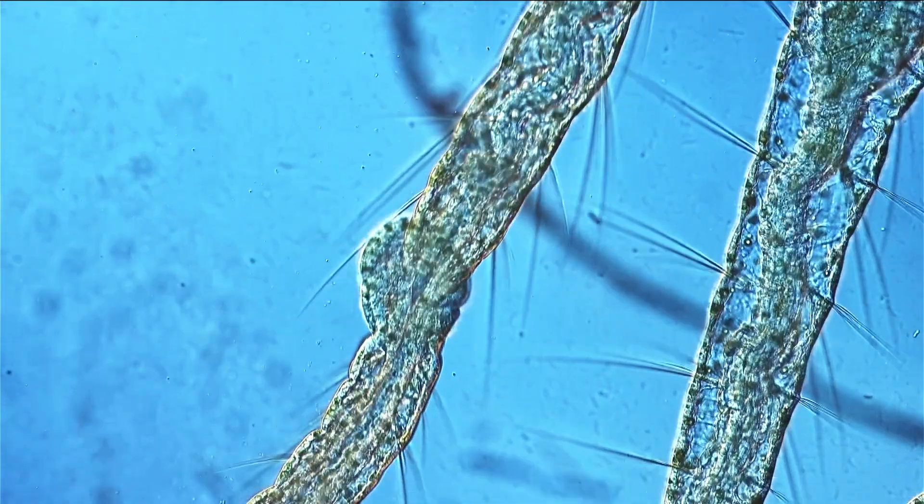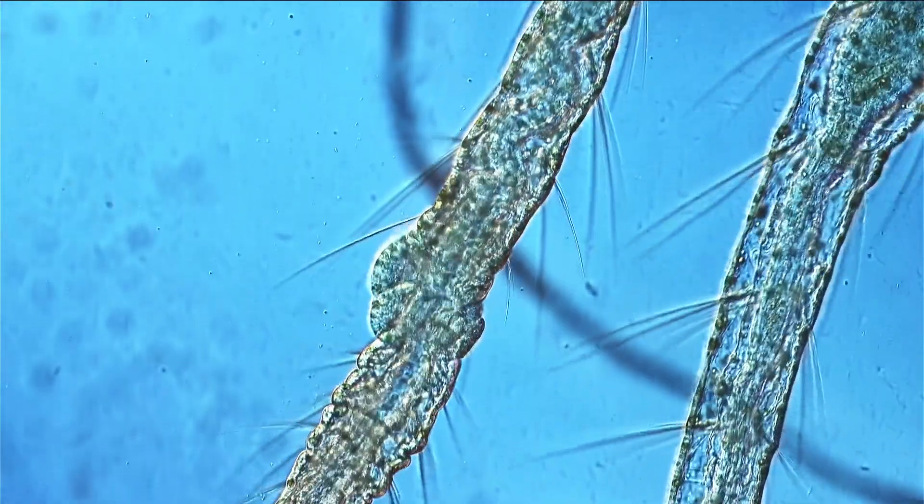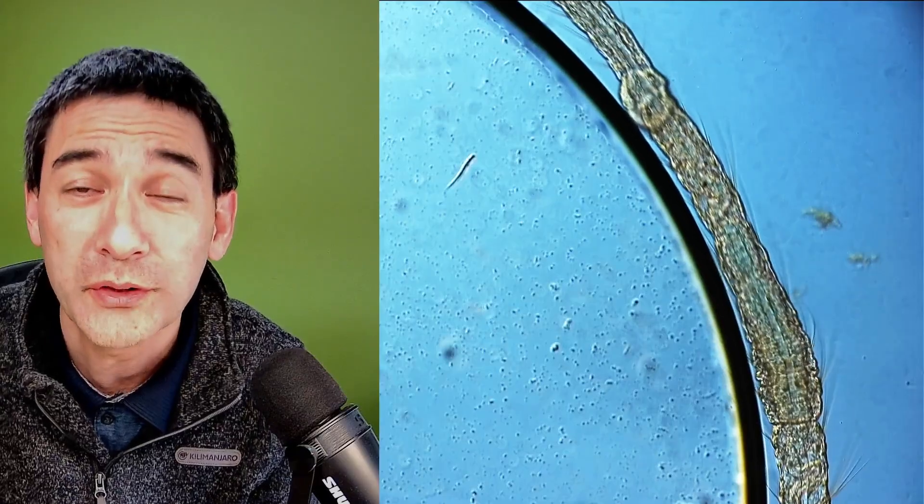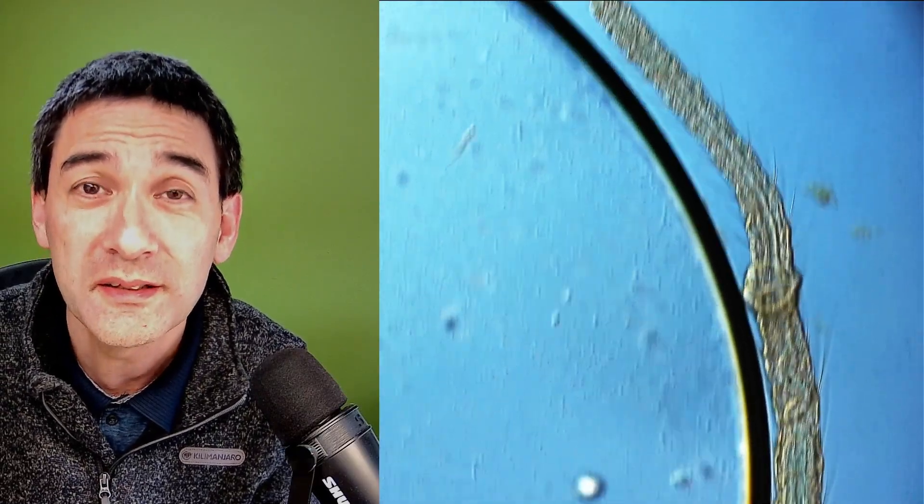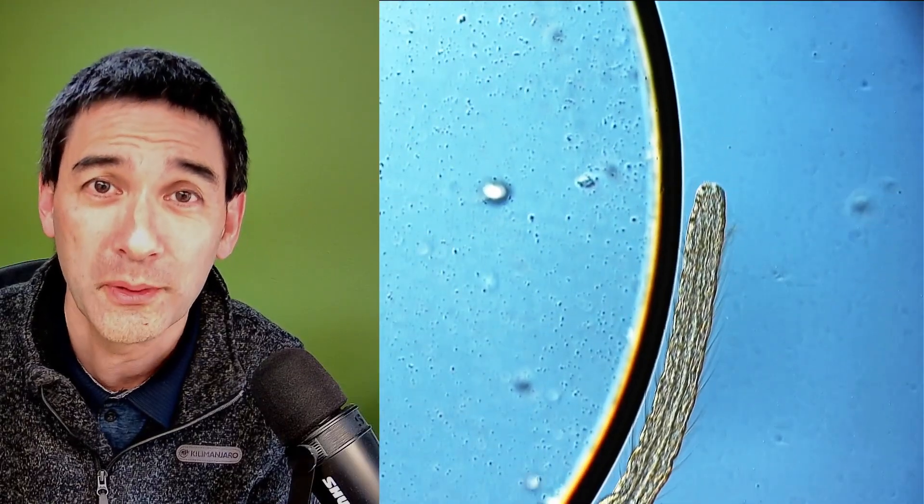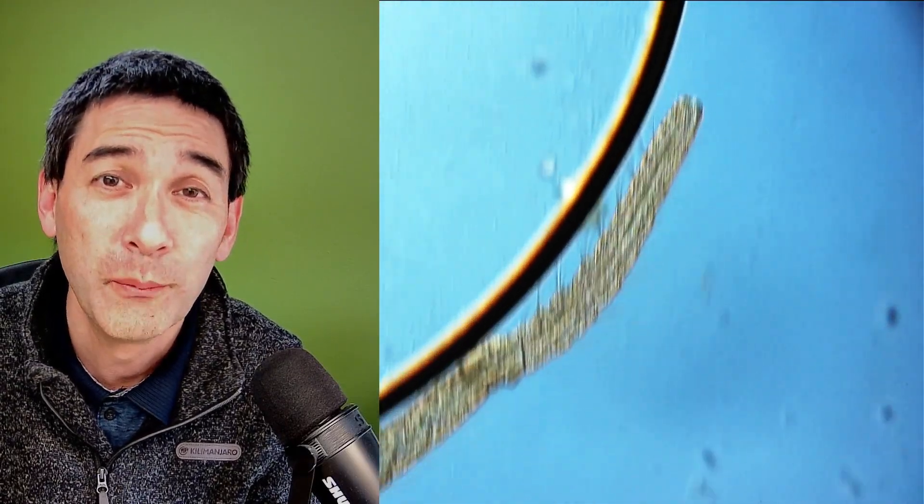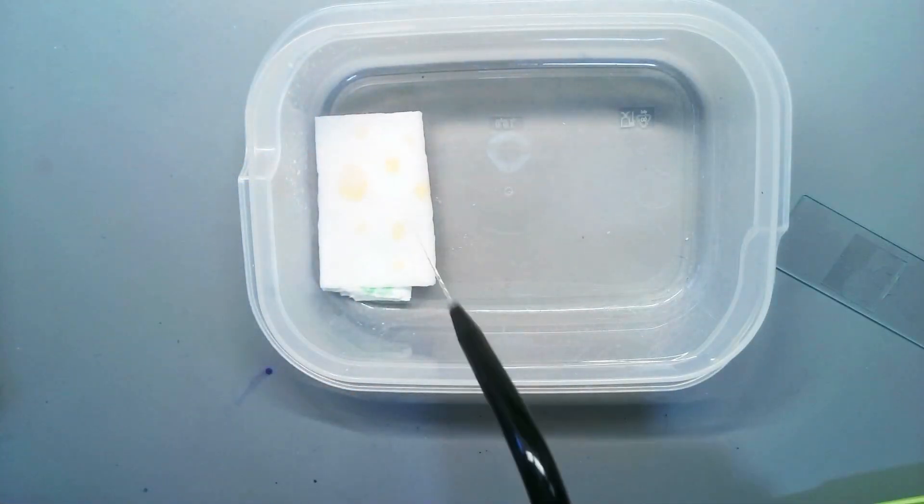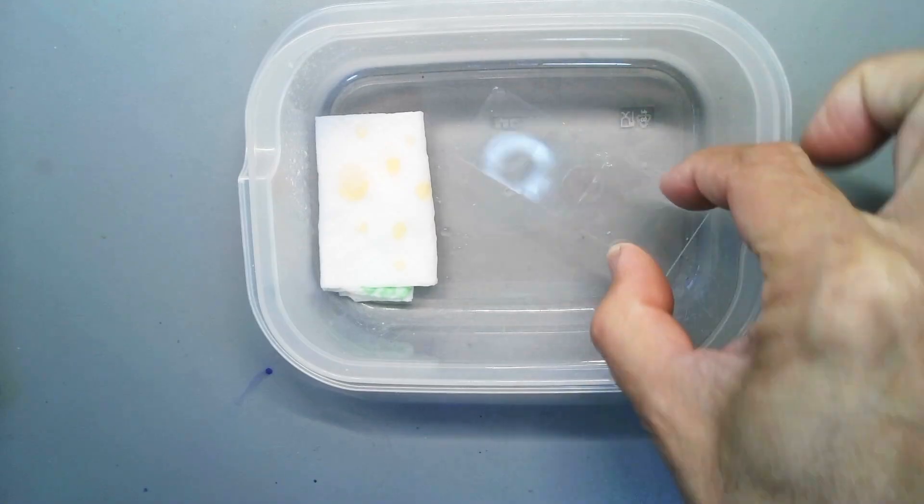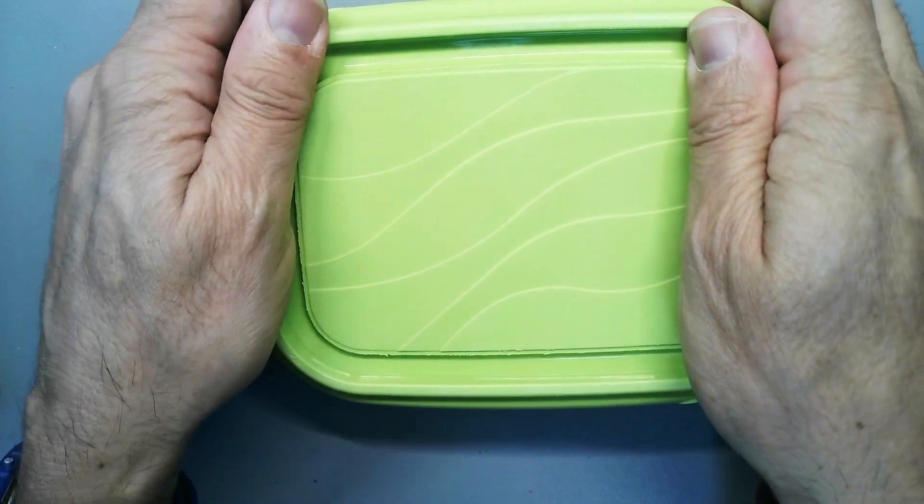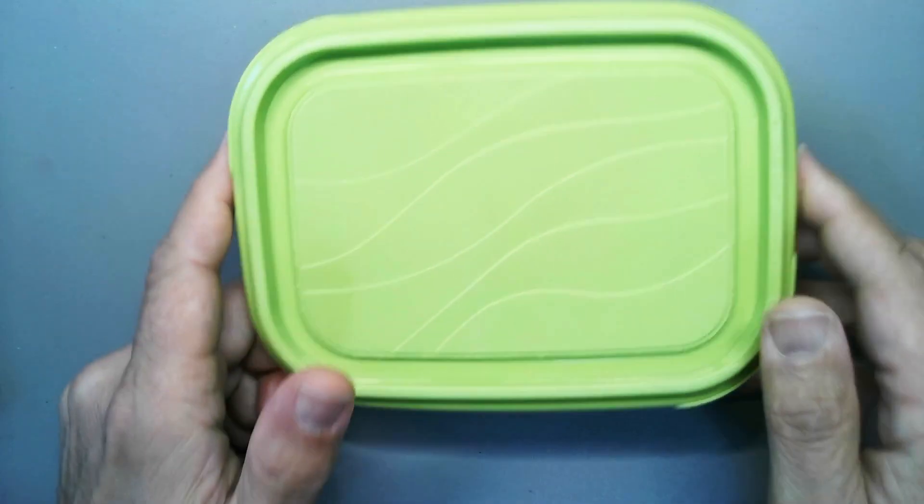However, water still will evaporate there. In order to make the slide storeable for a longer time, I've placed it into a plastic container with a wet tissue paper. The moisture in the container will be very high and this will significantly reduce the evaporation of the water. If water does evaporate, you just add another small drop and the worms are going to be happy again.